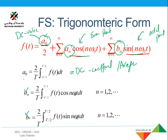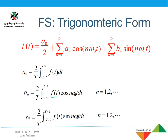We calculate the a_0 value by integrating our function for the complete time period from minus T over 2 to T over 2, but multiplied by 2 over T — previously we used 1 over T, here we use 2 over T. For the a_n calculation, we multiply f(t) with cosine of n*omega_0*t and integrate over the complete time period. For the b_n calculation, we multiply f(t) with sine of n*omega_0*t and integrate to get the b_n value.